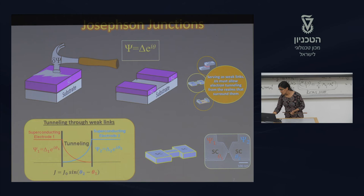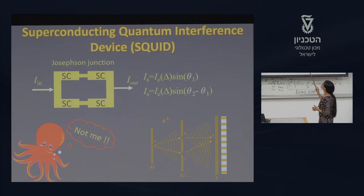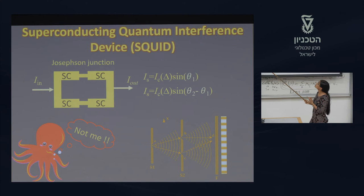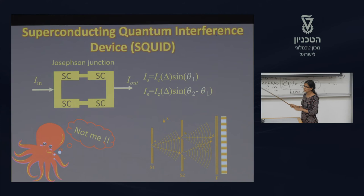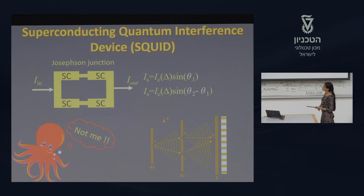What do we achieve because of this? We can achieve interference — similar to light interference through two slits. Instead of one Josephson junction, we put two Josephson junctions in parallel and achieve interference of current. This kind of device is called a SQUID — superconducting quantum interference device.